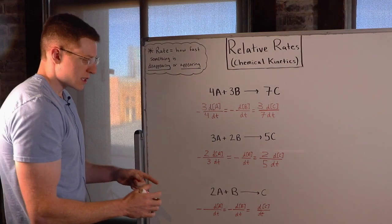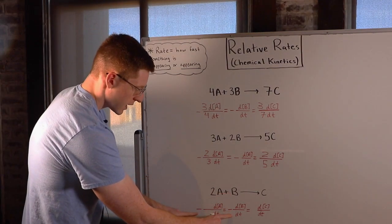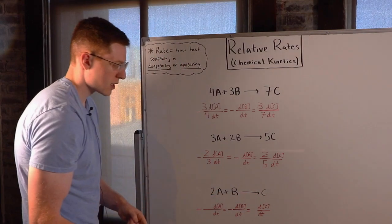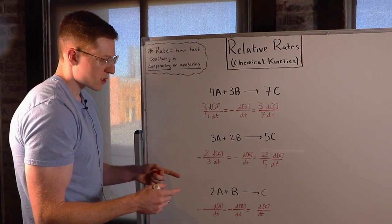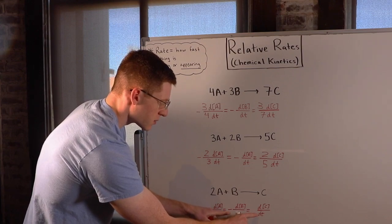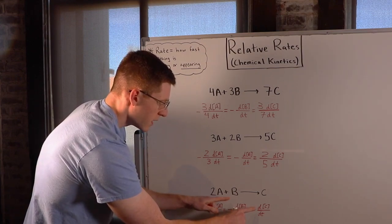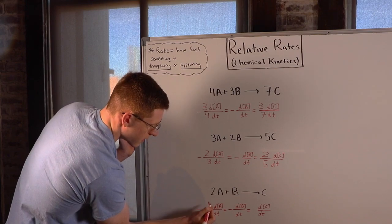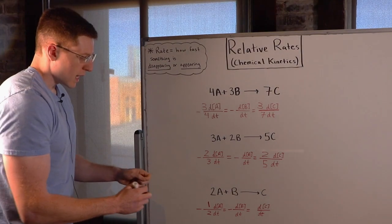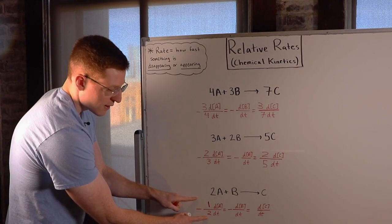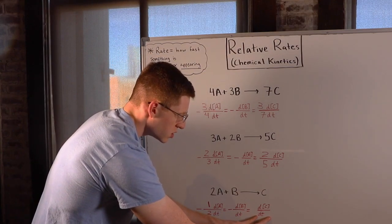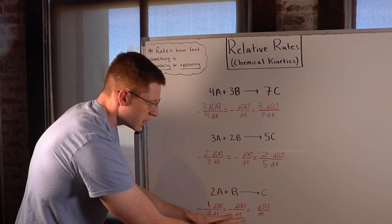For the last example, the reactants have negative signs in front of their relative rates, and C has a positive sign because it's a product. The two lowest stoichiometric coefficients are 1s in front of B and C, so those two terms have an invisible 1 in front of them. I take that 1, put it in the numerator, then place the coefficient 2 in A's denominator. This means A is disappearing 1/2 as fast as B is disappearing, and C is appearing just as fast as B is disappearing.